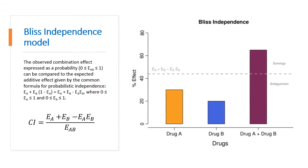The observed combination effect can then be compared to the expected additive effect given by the common formula for probabilistic independence. The resulting combination index can be calculated using the formula shown here.